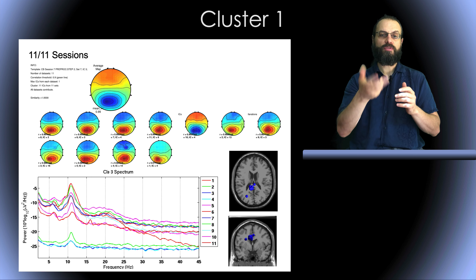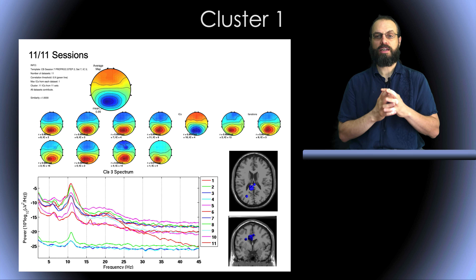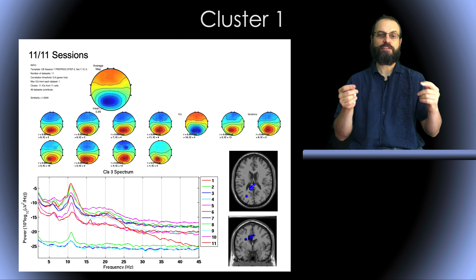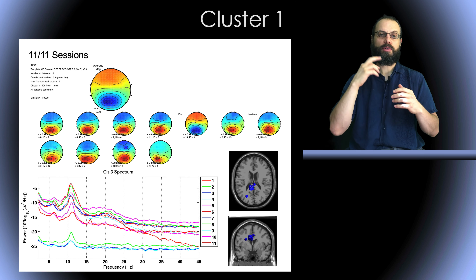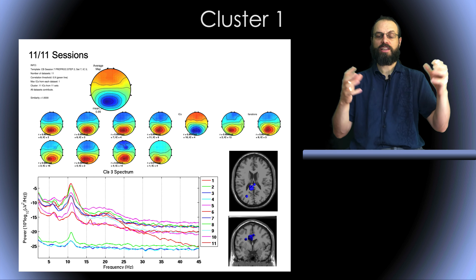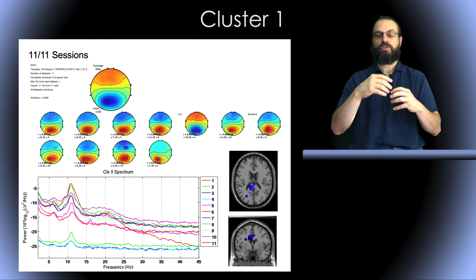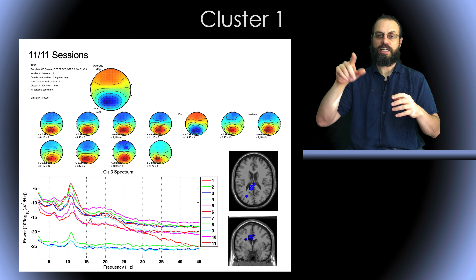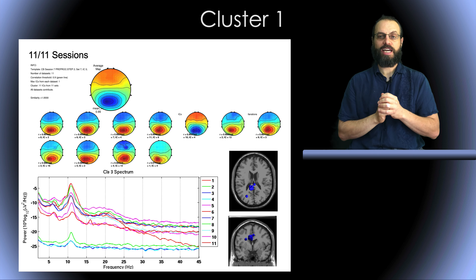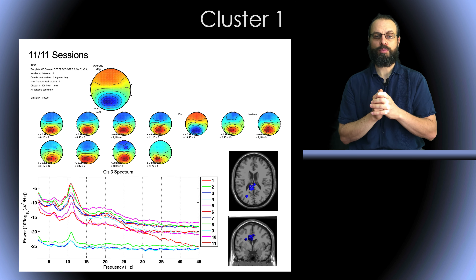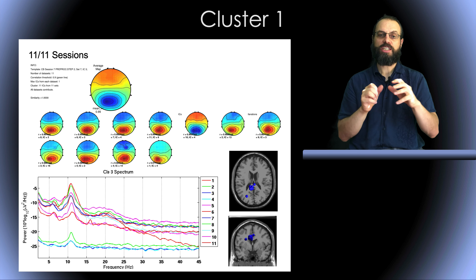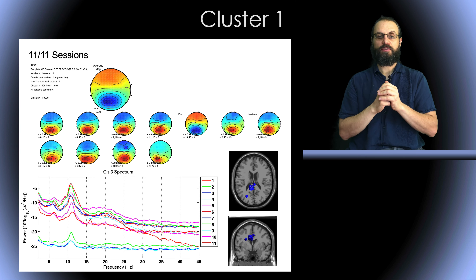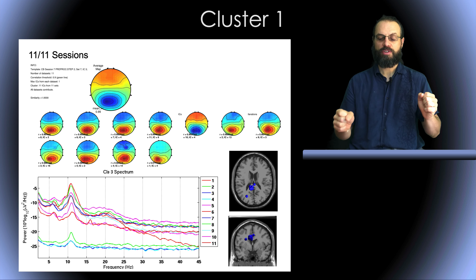Some of them are inverted. As we saw in a previous presentation, this doesn't really matter because if you multiply by minus one the scalp topography and by minus one the ICA activity, it cancels out. So it doesn't matter that they're inverted — it just means the ICA activity is also inverted. What's interesting is that the power spectrum for two of these components was very different. It might be that for this specific subject, several ICA components were splitting the activity from this brain region. The cluster was relatively tight.